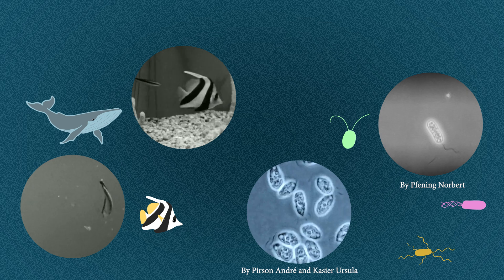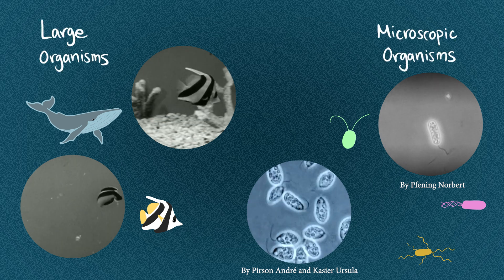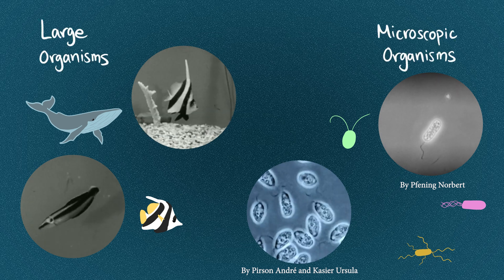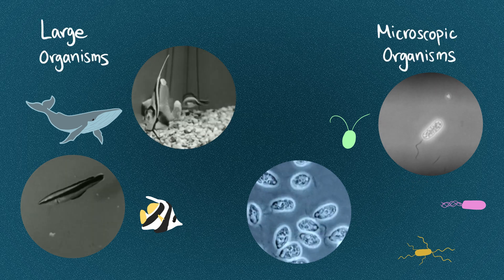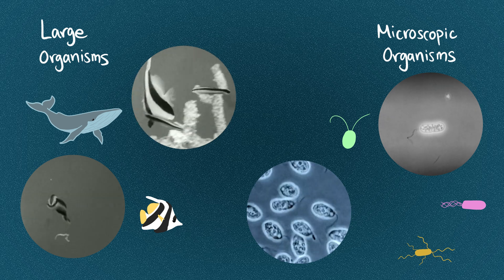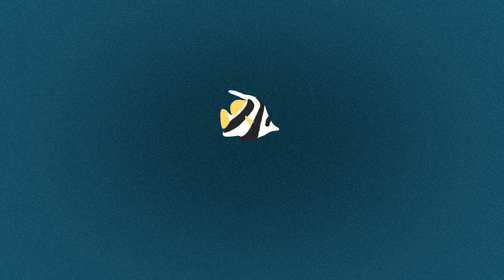Swimming is complicated if you're a tiny organism. Microorganisms like bacteria or algae experience entirely different physical rules than larger creatures. Swimming is a competition between inertial forces, which tend to keep the speed of moving objects, and viscous forces, which resist motion and slow things down.